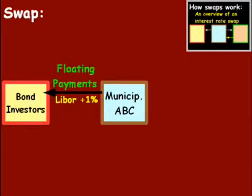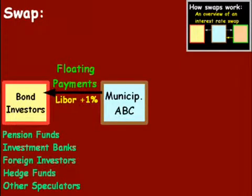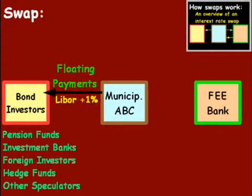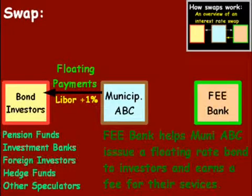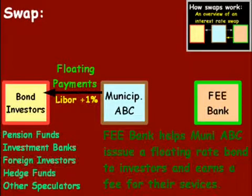So let's do an overview of what a swap looks like. Here we have Muni ABC — they've issued a bond to bond investors and they're making floating payments, LIBOR plus 1%. Let's say LIBOR is at 5%, so we'll have 6%. These bond investors could be pension funds, investment funds, banks, foreign investors, hedge funds, or other speculators. To the right in green, we have FeeBank. FeeBank has helped Muni ABC issue a floating rate bond to investors and earns a fee for their services, because they have the banking expertise that Muni ABC, as a municipality, does not.